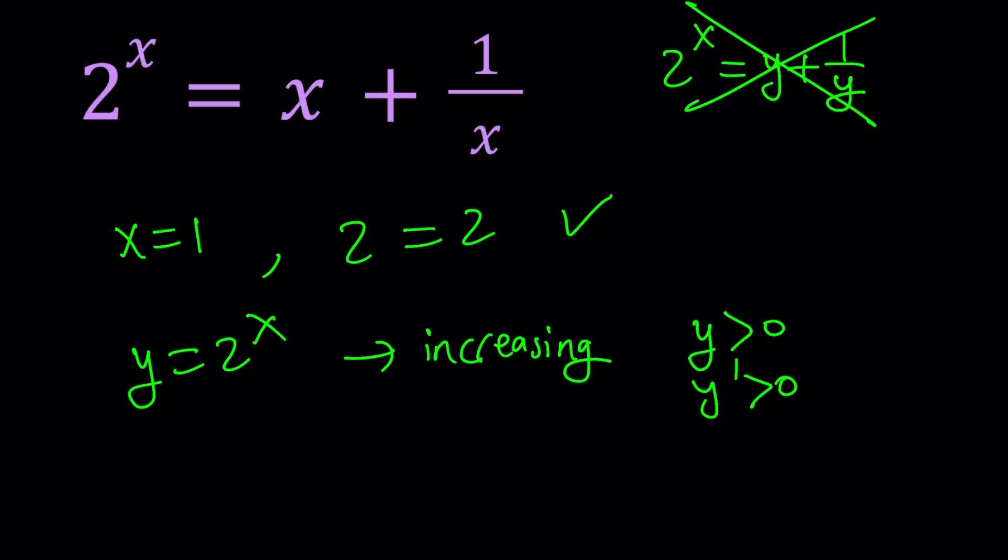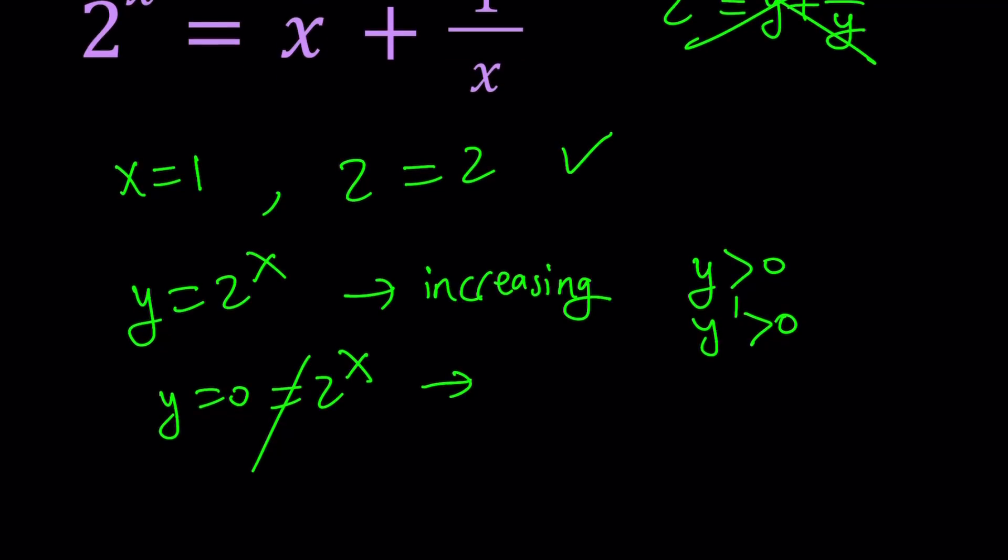And another thing that you can look at in terms of graphing a function is checking the x and y intercepts. Does this function have an x intercept? You can replace y with 0. And obviously, that's not going to give you any solutions because 2 to the power x cannot equal 0. So we don't get any x intercepts, but can we get y intercepts?